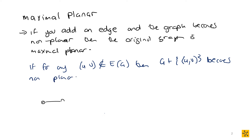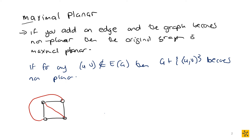Looking at this example here, this is not a maximal planar graph. Why? Because you could add an edge there, and you could even add another edge. Only once you've added those two edges do you have a situation where adding an additional edge will cause a crossing to occur. So maximal planar means: if you add an edge and the graph becomes non-planar, then the original graph is maximal planar.